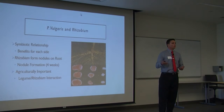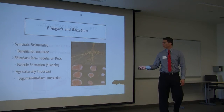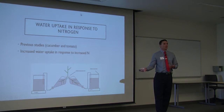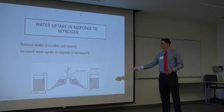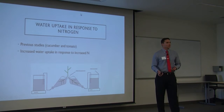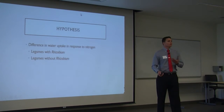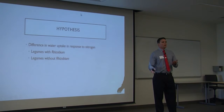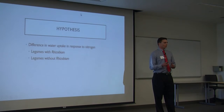The legume-rhizobium interaction is agriculturally important because it is one of the most abundantly used rhizobium interactions within agriculture. In previous studies done by Gorska et al., they used a cucumber plant and a tomato. Using a split root technique, they saw that with increased nitrogen levels, there was an increase in water uptake. In my experiment, I believe there will be a difference in water uptake in response to nitrogen introduction, with legumes grown with rhizobium versus legumes grown without rhizobium.